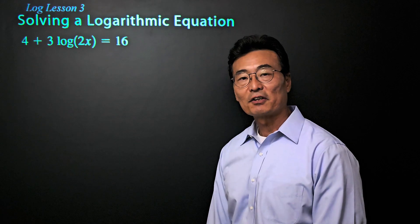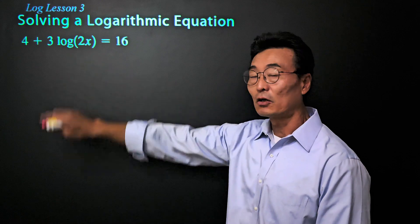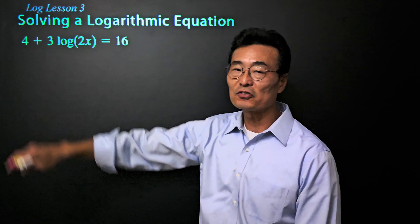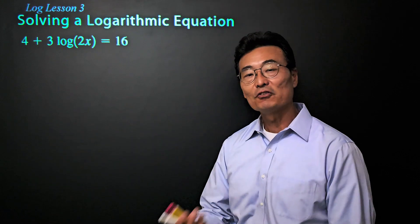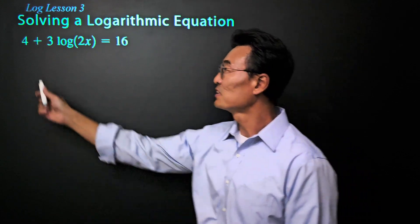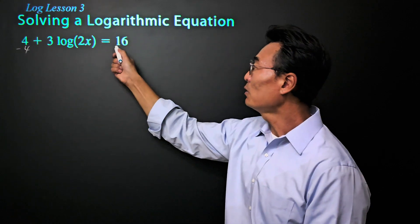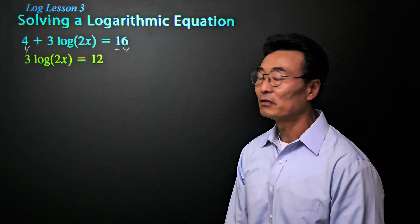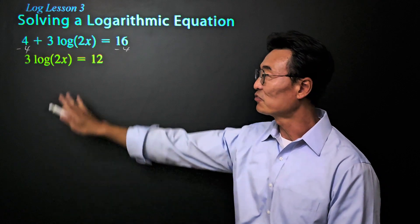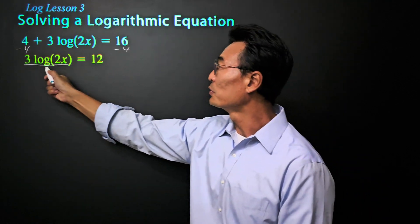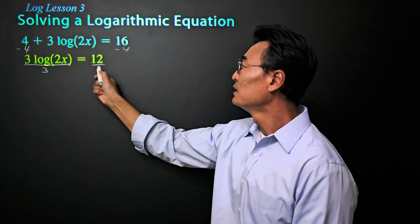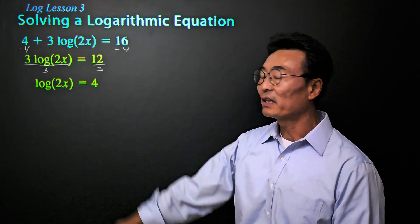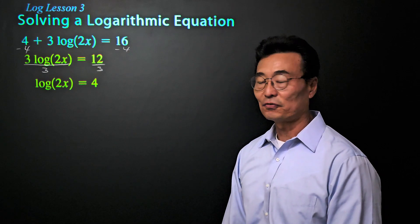This time, instead of an exponential equation, we have a logarithmic equation. To solve for x, we need to get rid of that four and also the three so that we can have the log by itself. Step one: subtract four from the left and the right side, giving us three log of two x equals 12. Next, to get rid of that three, we're going to divide by three on the left and three on the right, where we're left with log of two x equals four.